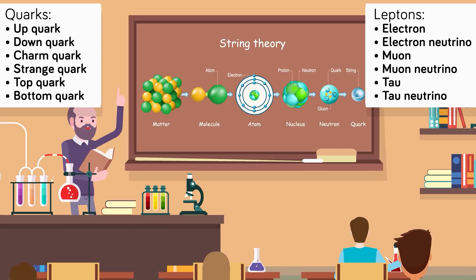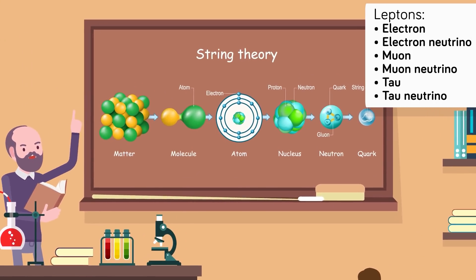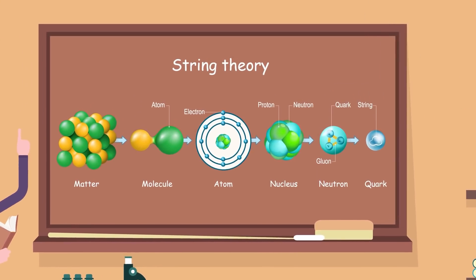The leptons include the electron, electron neutrino, muon, muon neutrino, tau, and tau neutrino.